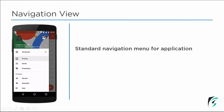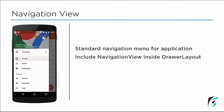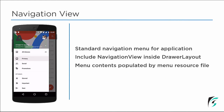Navigation View is a standard navigation menu for application. It provides us with a menu which we can show below our header and define the menus in a Menus folder, just like we do for our Overflow menu. It includes the Navigation View inside the Drawer Layout — it is an advanced version of it. The menu contents in the Navigation View are populated by the menu resource file, like we set the menu for the Overflow menu.